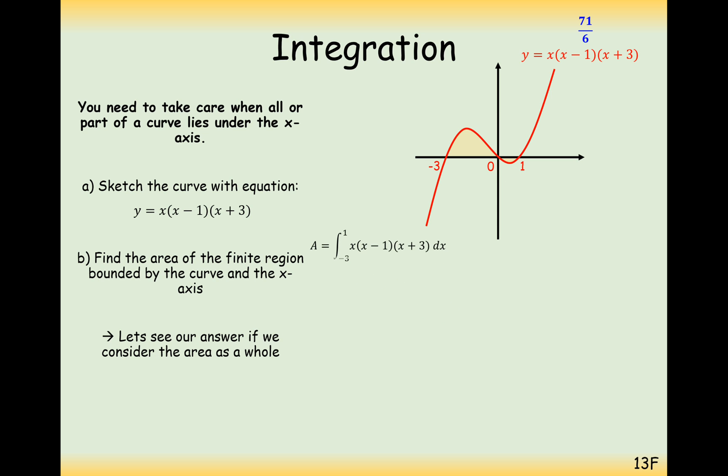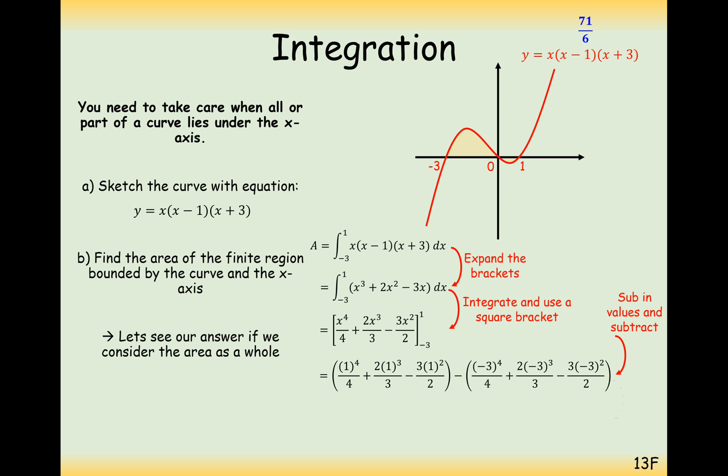Let's just see what will have happened if we were to have done a straight integration between minus 3 to 1, which would have been the incorrect way of doing this question. We would have expanded our brackets, integrated, substituted in 1, take away the substitution of minus 3. And we've got 32 over 3, which is not the same as 71 over 6. If you calculate it, it would have been this area taken away this area would have been our answer here. But that's not the correct answer. That's not the correct way of doing it. You do it separately, 71 over 6 would be your final answer.